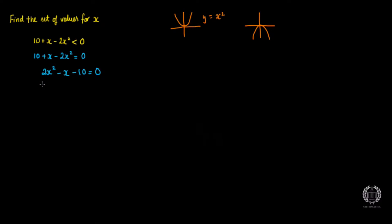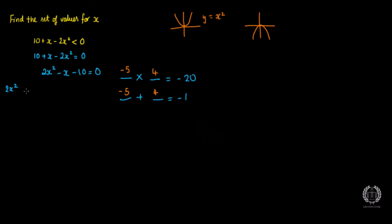To factorize 2x² − x − 10, I want two numbers that multiply to give −20 (that's 2 × −10) and add to give −1. Those numbers are −5 and +4, since −5 + 4 = −1 and −5 × 4 = −20. So I split the middle term: 2x² + 4x − 5x − 10 = 0.